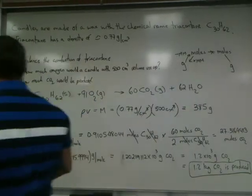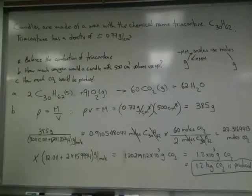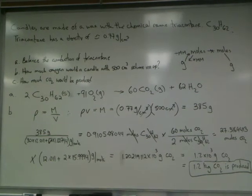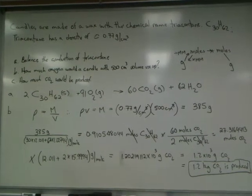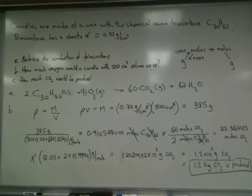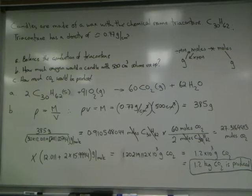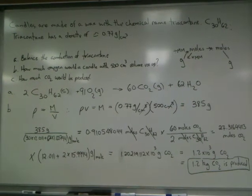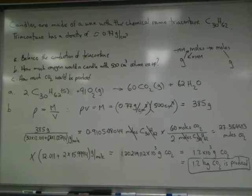Here's our problem. Candles are made of wax with the chemical name triacontane, C30H62. Triacontane, we'll assume, has a density of around 0.77 grams per centimeter cubed. I wasn't able to actually look up the exact density of triacontane, but it's not that important for the sake of our problem.